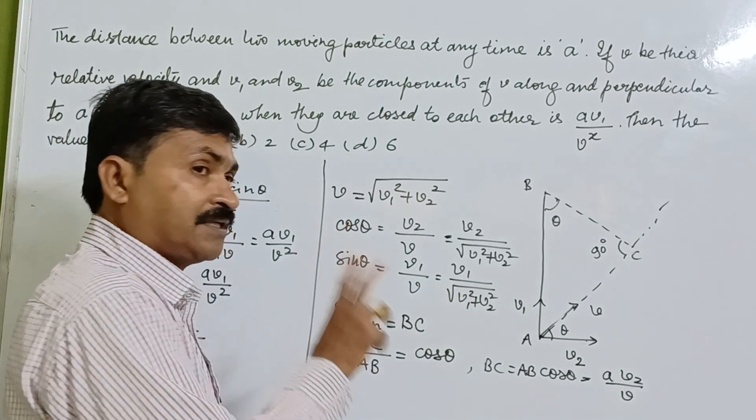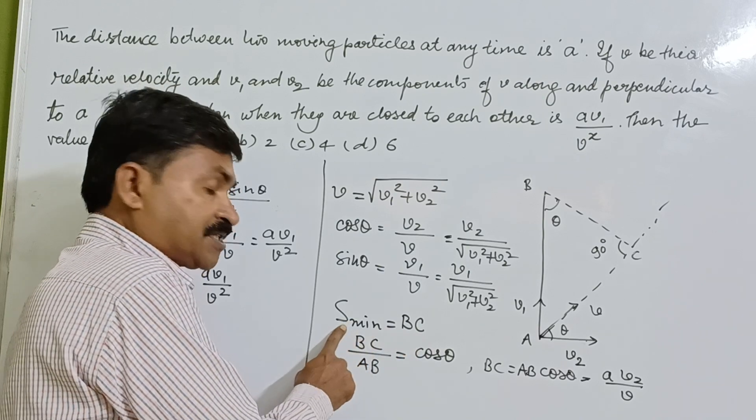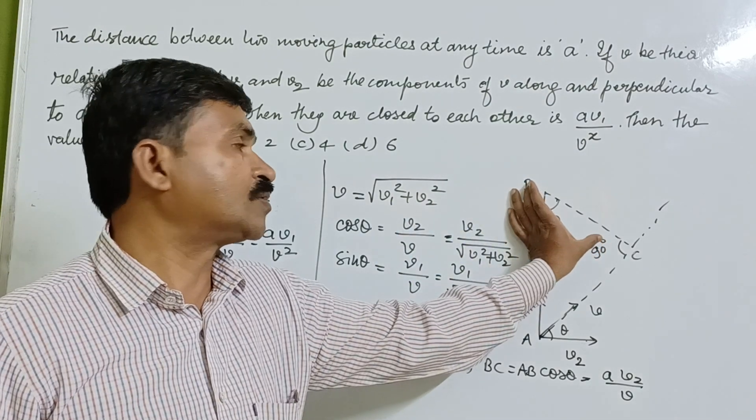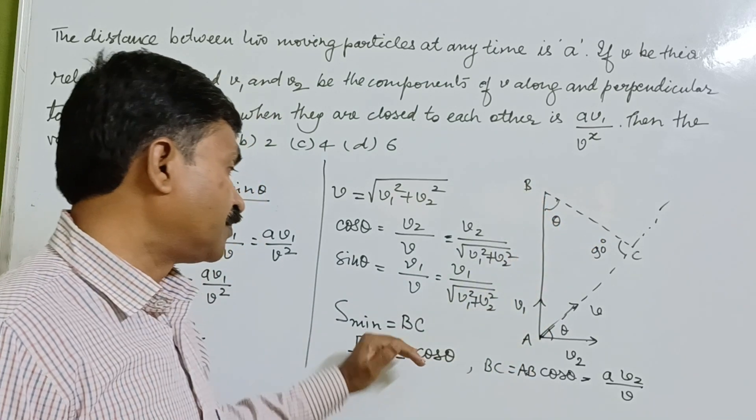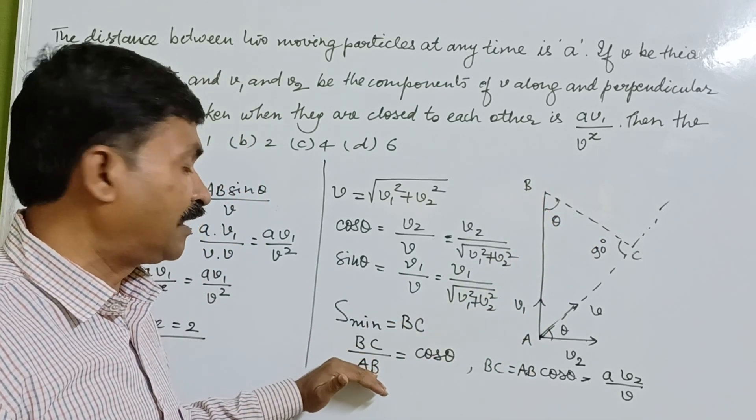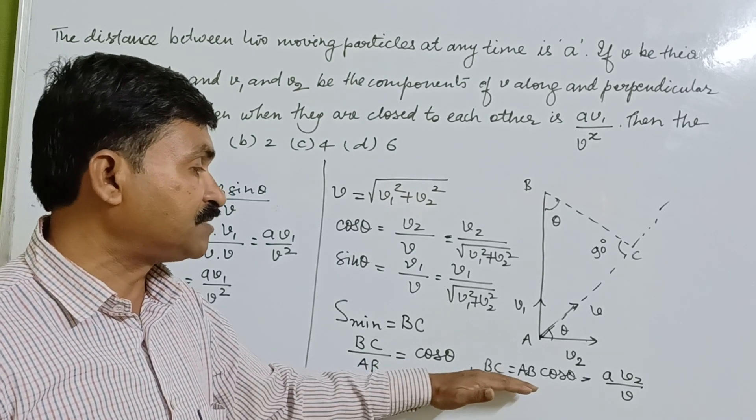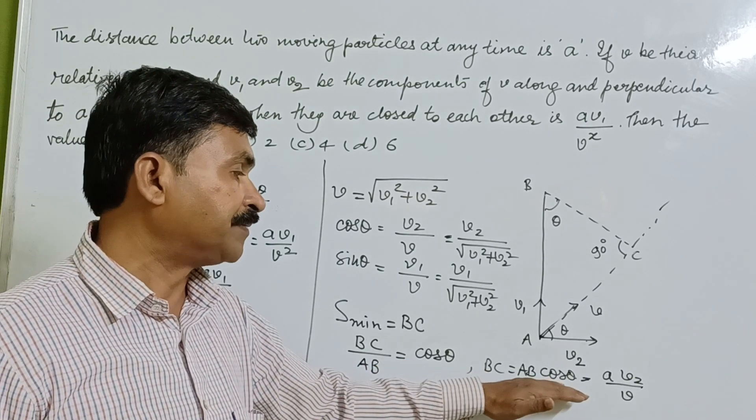Now we have to determine the minimum. First, S min. How do we make this S min? What is this? Perpendicular distance. So BC is equal to AB cos theta. Now, AB is the same as A.